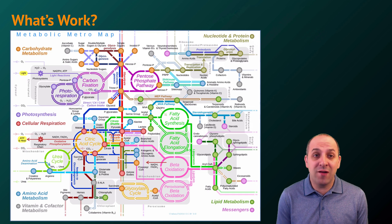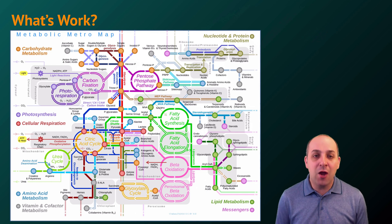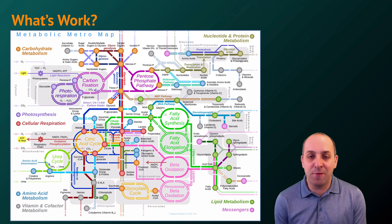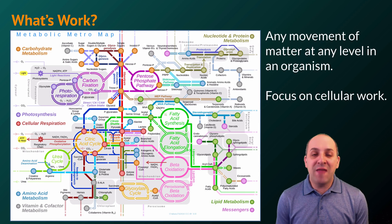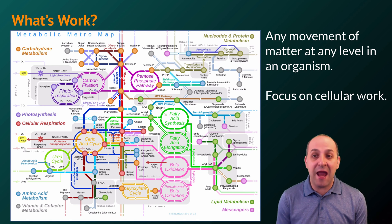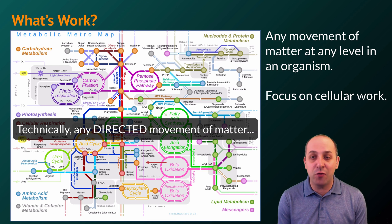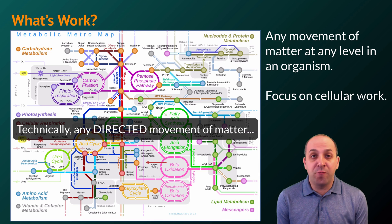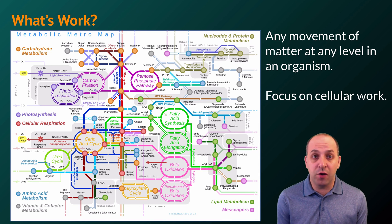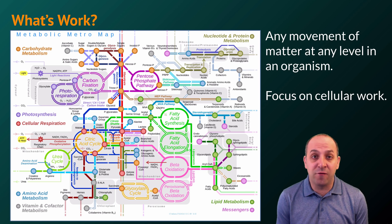When I say that work is everything, I mean that work is everything. This is a graphical map of all of the different metabolic reactions that take place inside of cells, and without exception they all require matter to be moved around in order to happen. Any movement of matter at any level in an organism is work. We're going to focus for the most part on cellular work, because ultimately cellular work is what allows for and drives all of the work that biological systems are doing.